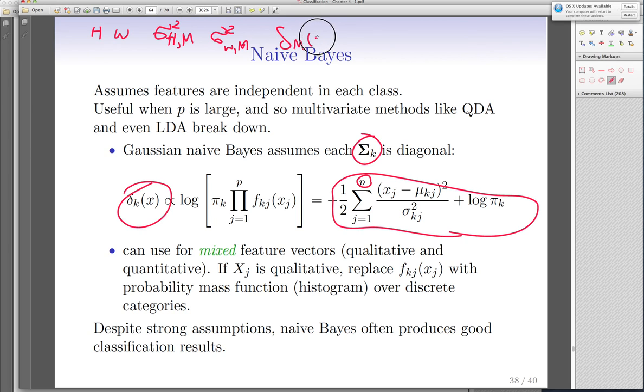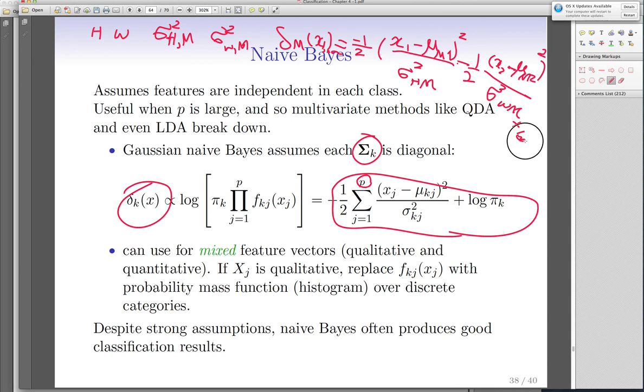So, delta male of x is - actually we have two variables, x1 and x2. So, it will be -1/2 (x1 - μ of males for height)² / σ² height male squared plus -1/2 (x2 - μ of male for weight)² / σ² of weight in male plus log π of male, the prior probability for males.